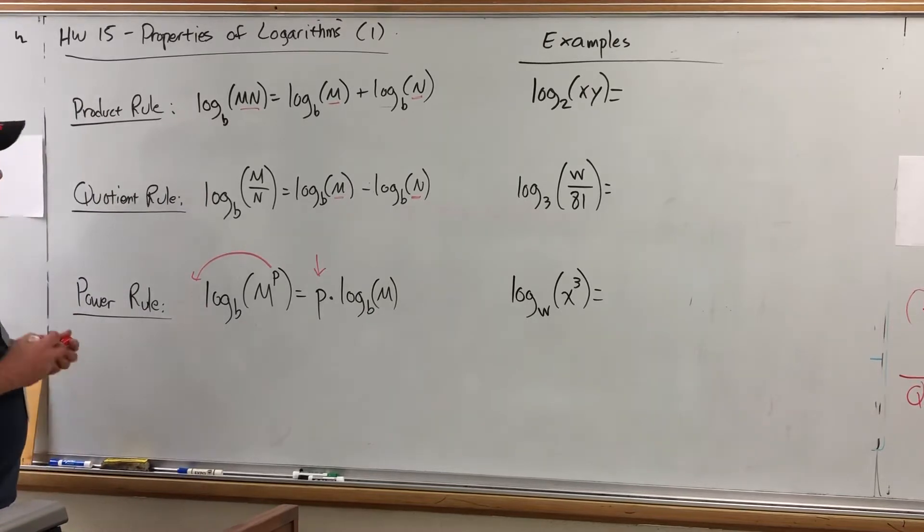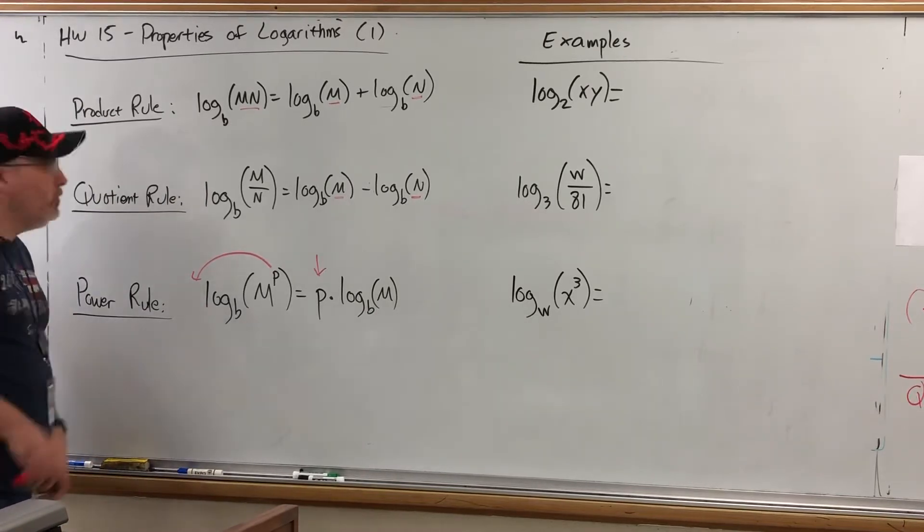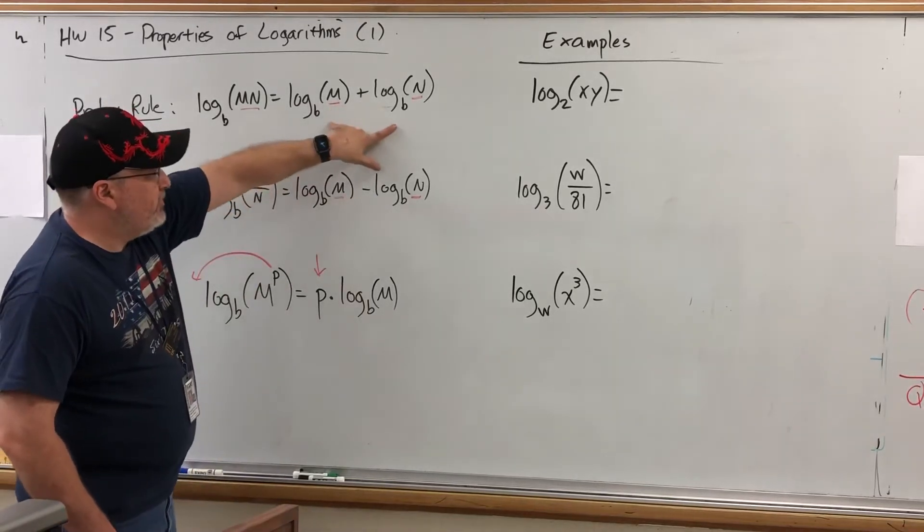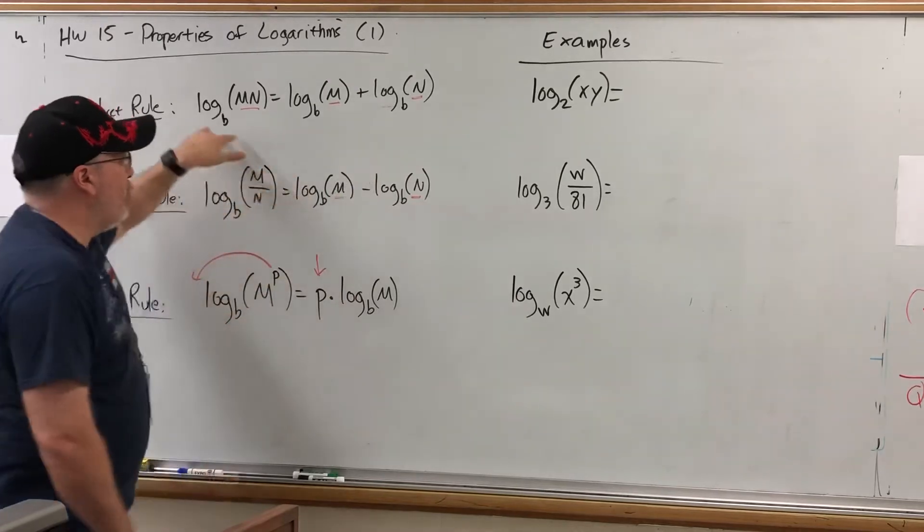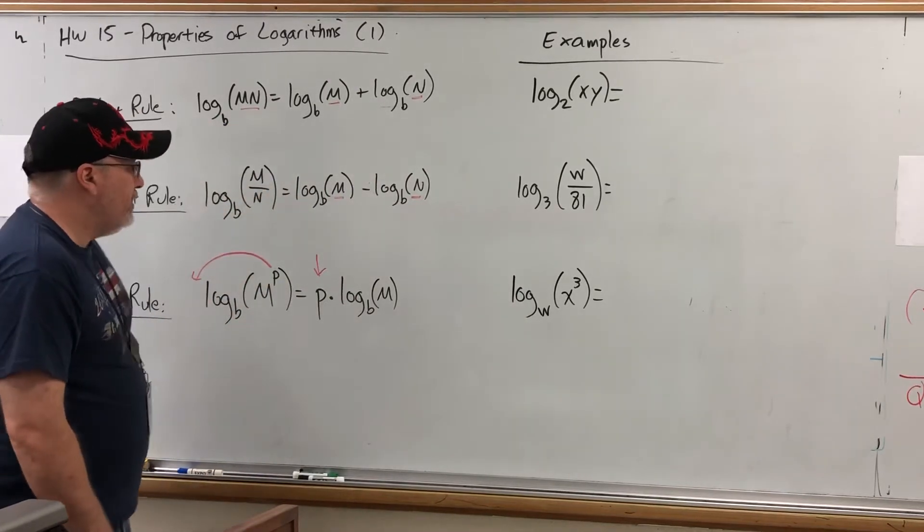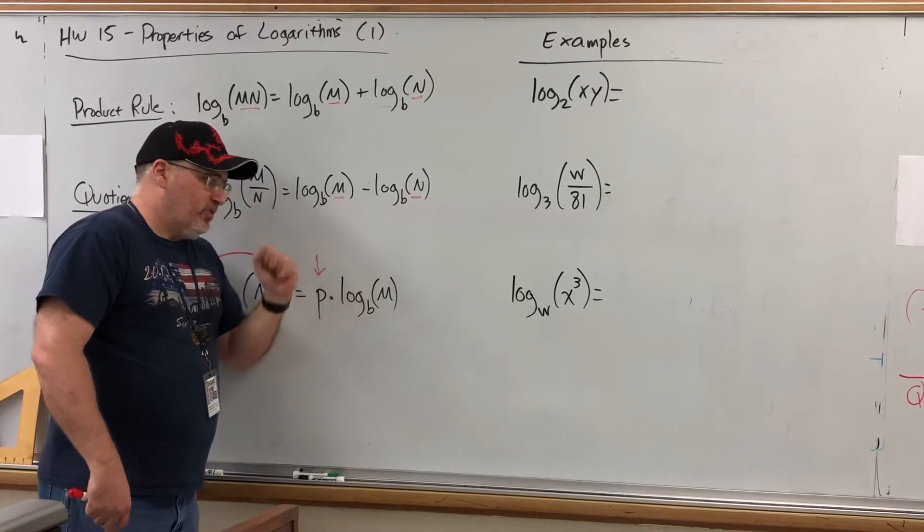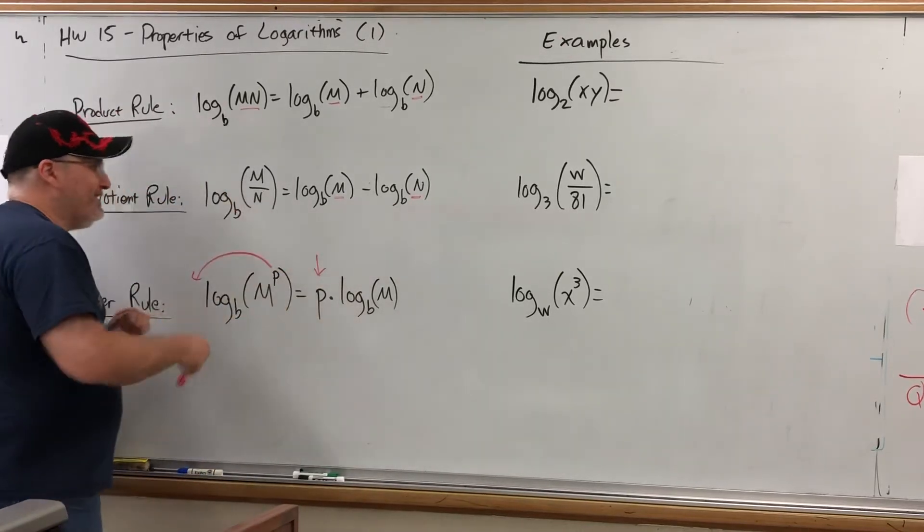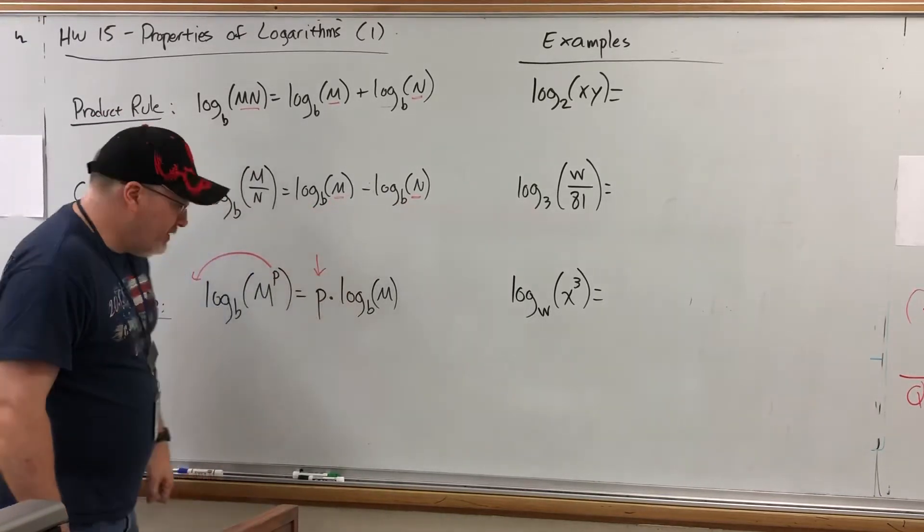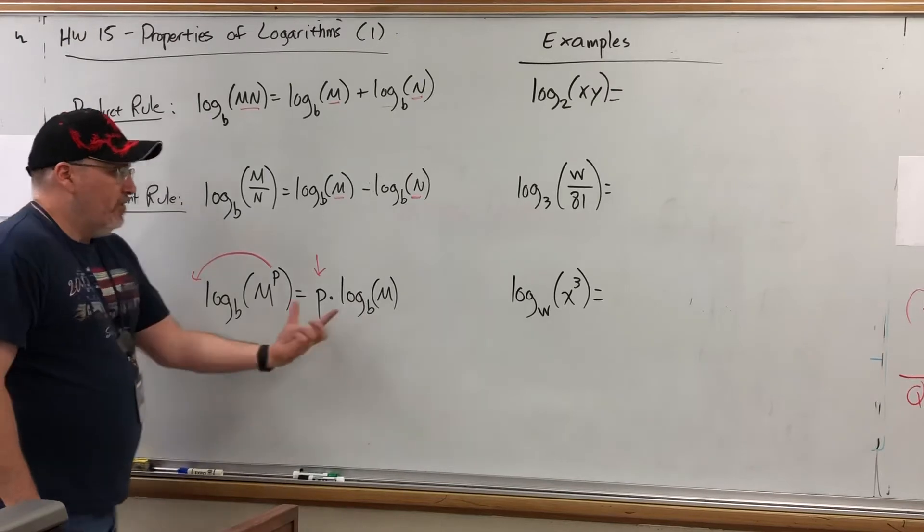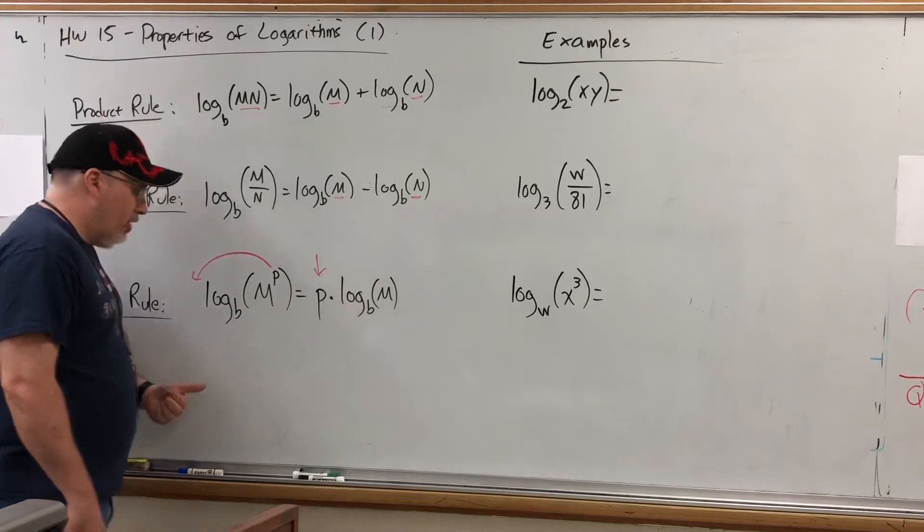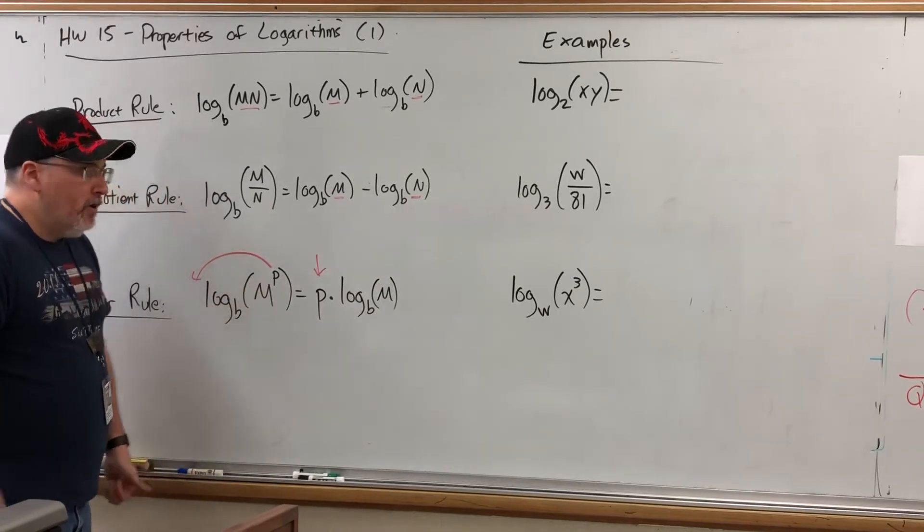It's worth mentioning that all of these rules also work in reverse. For example, the product rule in reverse says if you are adding two logarithms with the same base, you can condense them into one logarithm by multiplying your arguments. If you find the difference of two logarithms with the same base, you can condense it into one logarithm by putting the first argument on top of the second argument. And if you have a logarithm with a coefficient in front, you can move that coefficient inside the logarithm as a power on the argument.